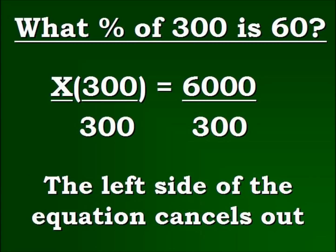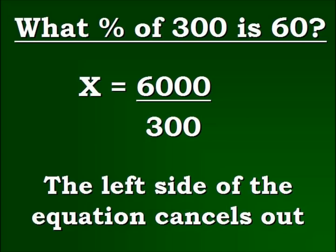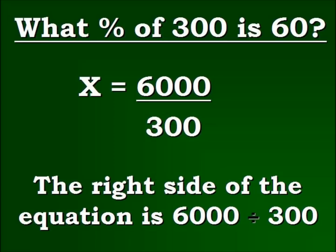The left side of the equation cancels out. Now, we have X by itself, and we very simply, we're going to have to divide 300 into 6,000.